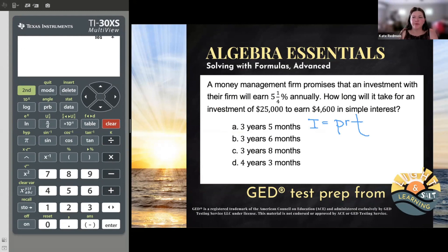Now let's use it. So in general, when we use a formula, especially with a word problem, it's important to go looking through and see what numbers we have. So a money management firm promises that an investment with their firm will earn five and one quarter percent annually. See that percent? That's a percentage rate. That is the interest rate. That is the R. How long? They're asking us about length of time there. They're asking us to find T. T is the thing we don't know.